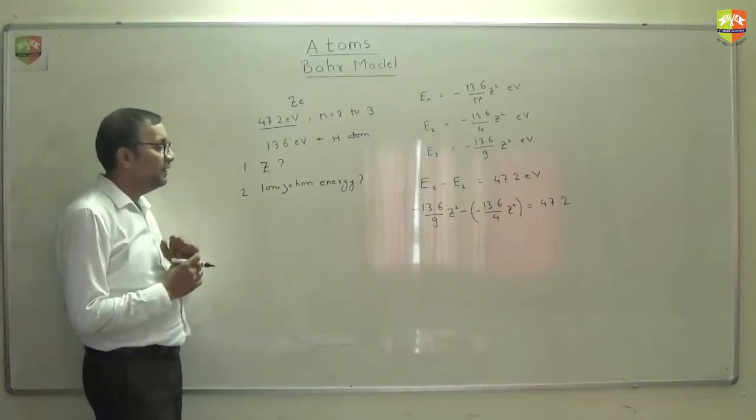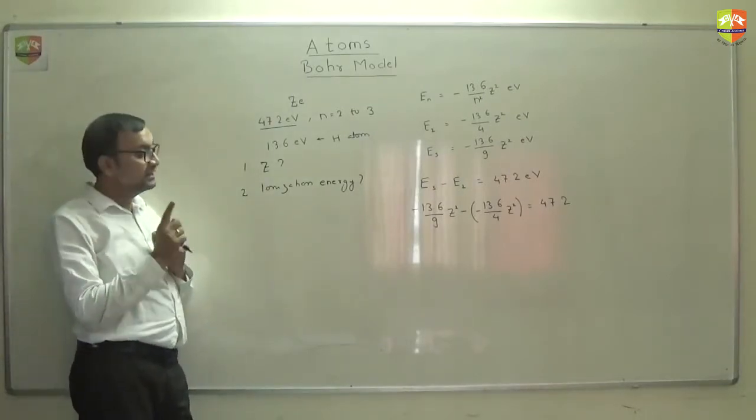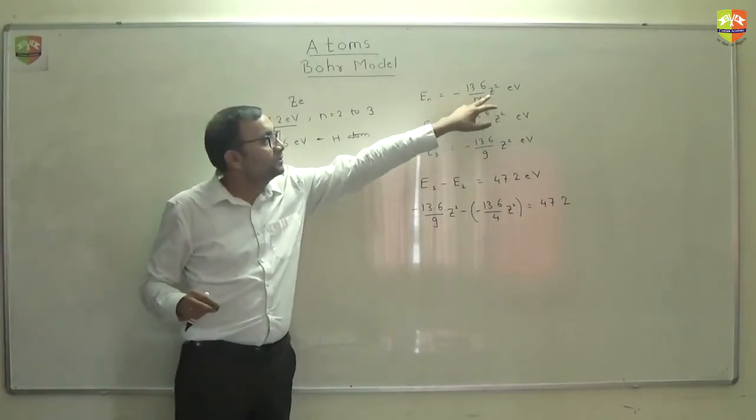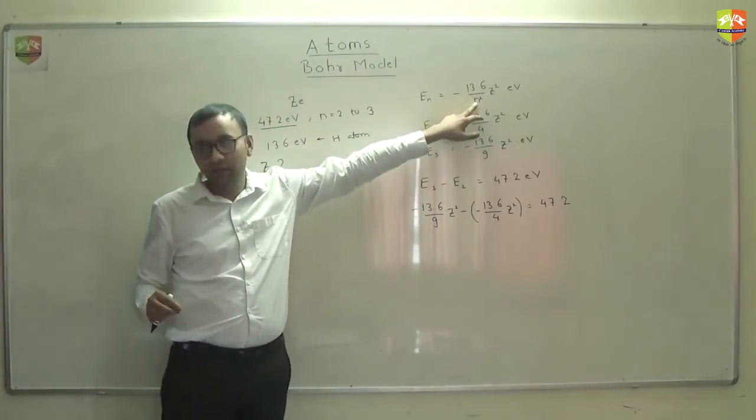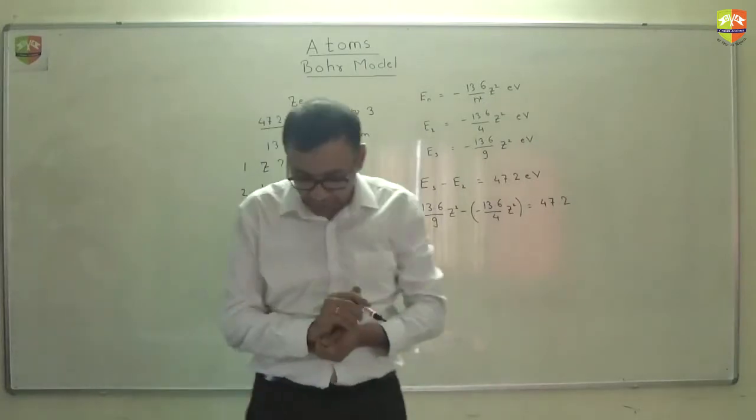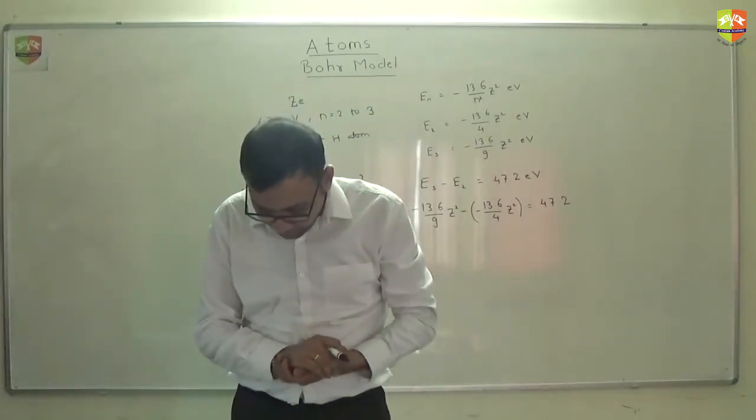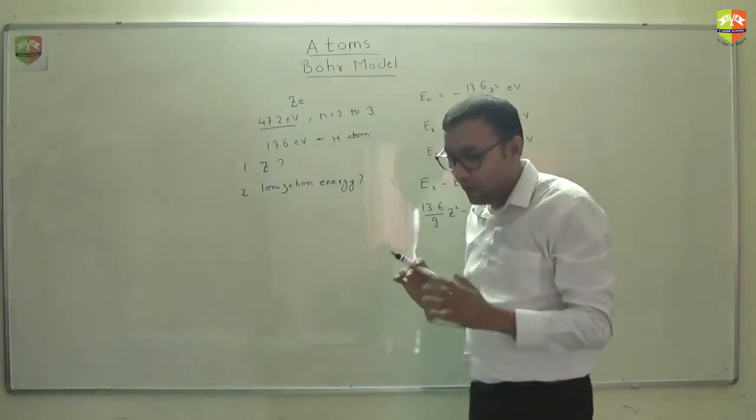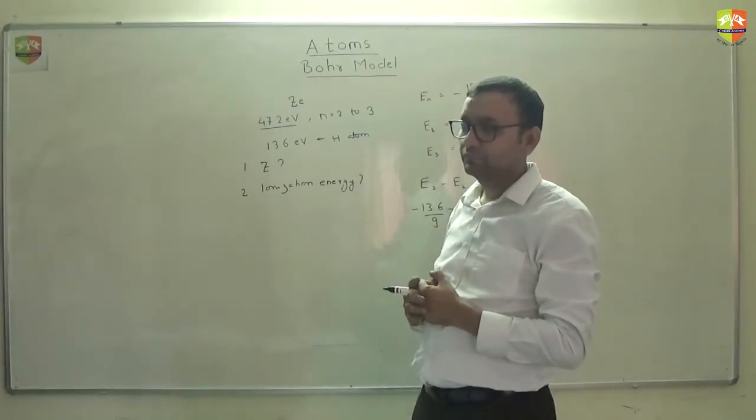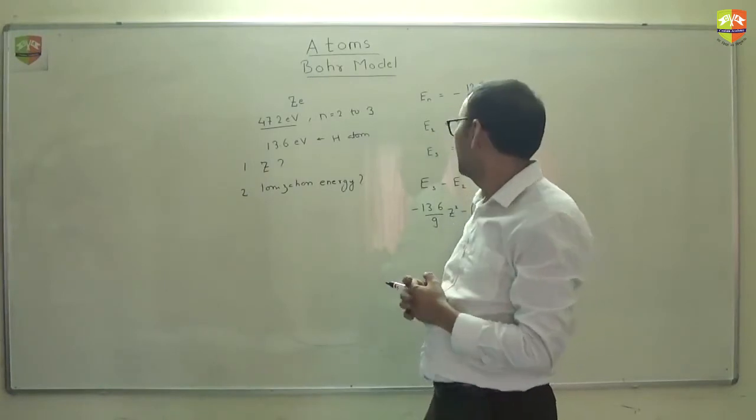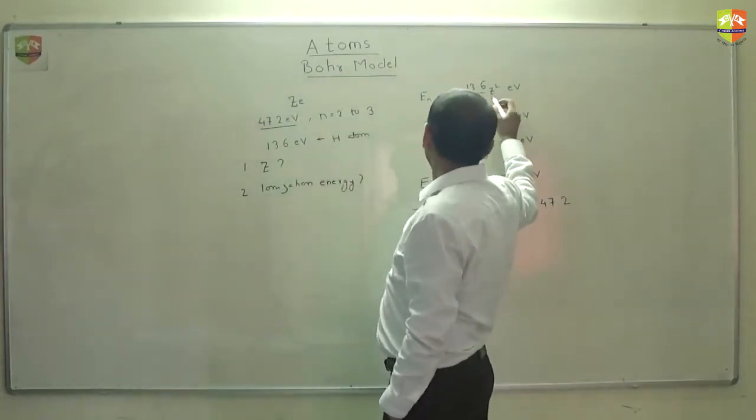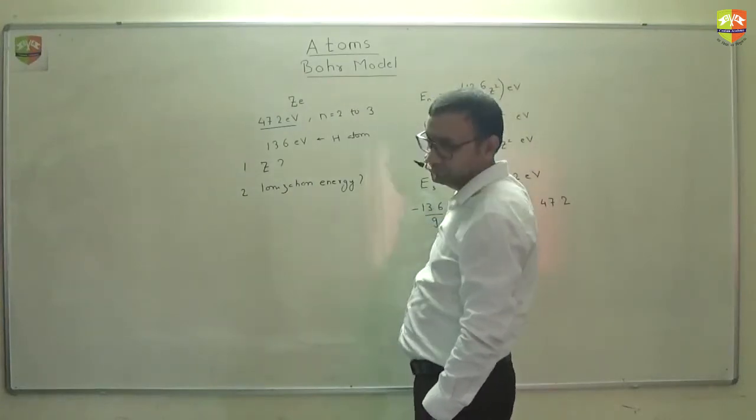From here you get the value of Z. How will you get ionization energy? Its energy in first is the ionization. Mod of that is ionization energy. So once you get the value of Z, substitute here and put n equal to 1. You get minus of that. You need to supply that much energy to make it 0. So that is the ionization energy. Any doubt? How will you get potential energy of the electron in the first Bohr orbit for this? Potential energy is double of the total energy. You are again and again making the same error. Potential energy is double of this total energy.